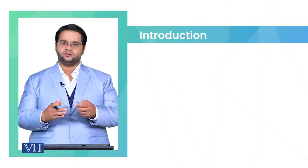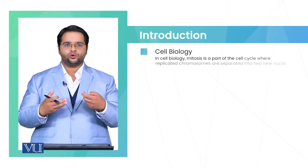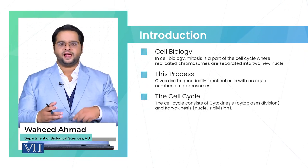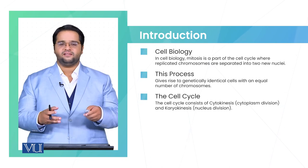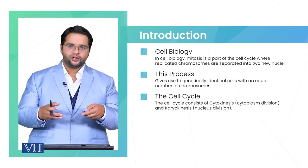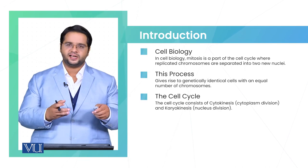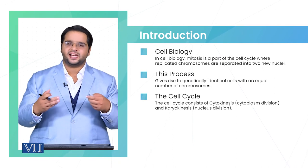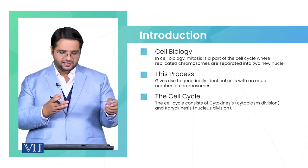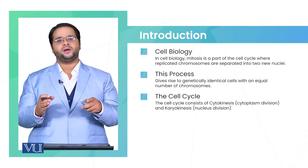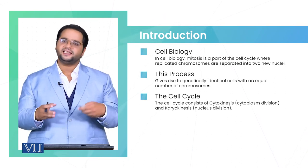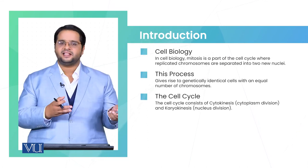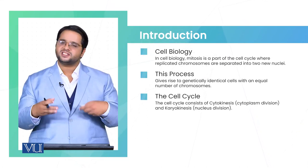Dear students, today we are going to discuss mitosis through prepared slides. Mitosis is the type of cell division and it is a part of the cell cycle where the replicated chromosomes are divided into two cells that are identical to the parent cell. The process of mitosis gives rise to genetically identical cells that resemble the parent. Mitosis consists of two major phases: karyokinesis and cytokinesis. Karyokinesis is the division of genetic material while cytokinesis is the division of cytoplasm.